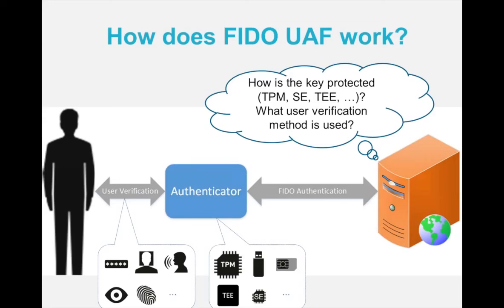In FIDO, identity binding is a bit out of scope — we give relying parties the flexibility to implement various identity binding methods. Most relying parties have already found ways to bind an identity to a database record. This identity binding method really depends on the vertical and the region: banking is different from healthcare, different from e-commerce, and banking regulation in Europe is slightly different from the U.S., Africa, or Asia. This gives the FIDO protocol the ability to scale globally.